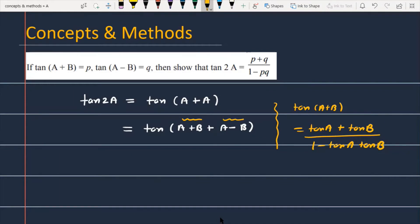I'm using the formula of tan A plus B. So this will become, this is tan of A plus B, this is tan of A plus B plus tan of A minus B. This is a second part and divided by, this is 1 minus tan of A plus B into tan of A minus B.